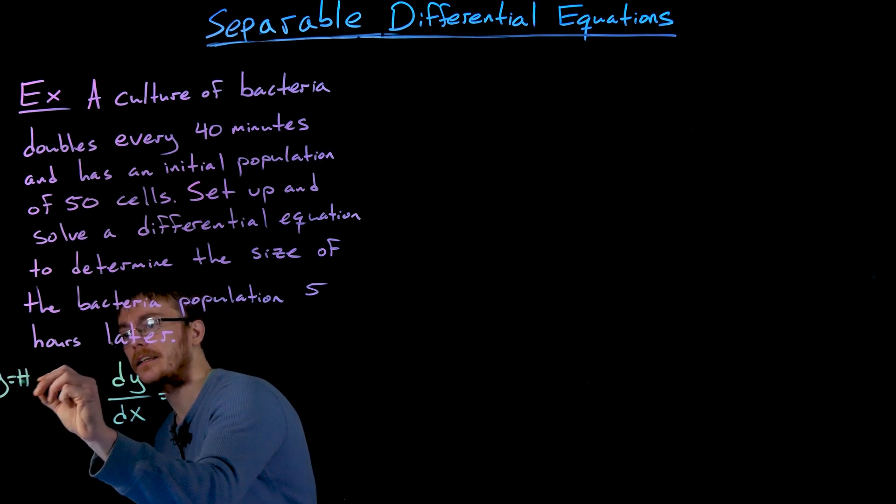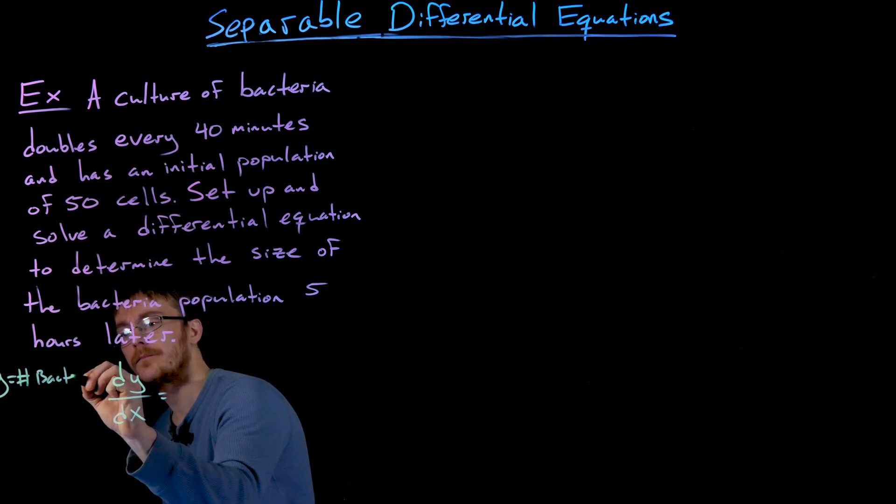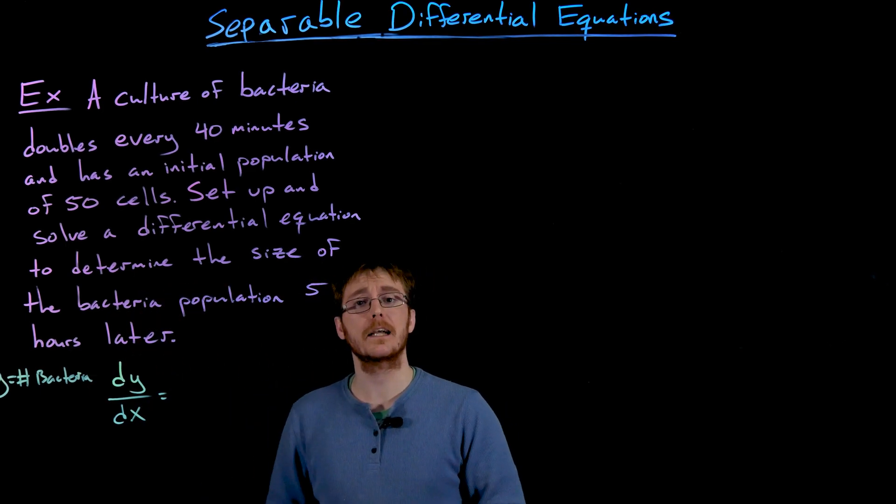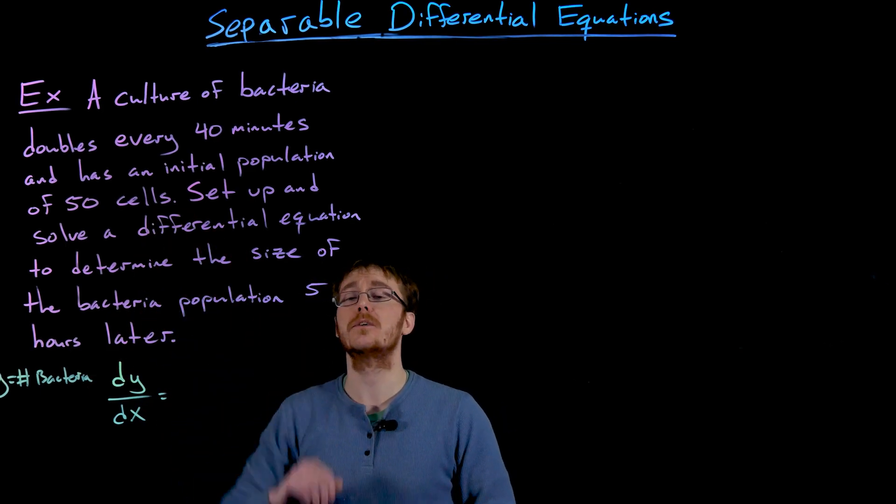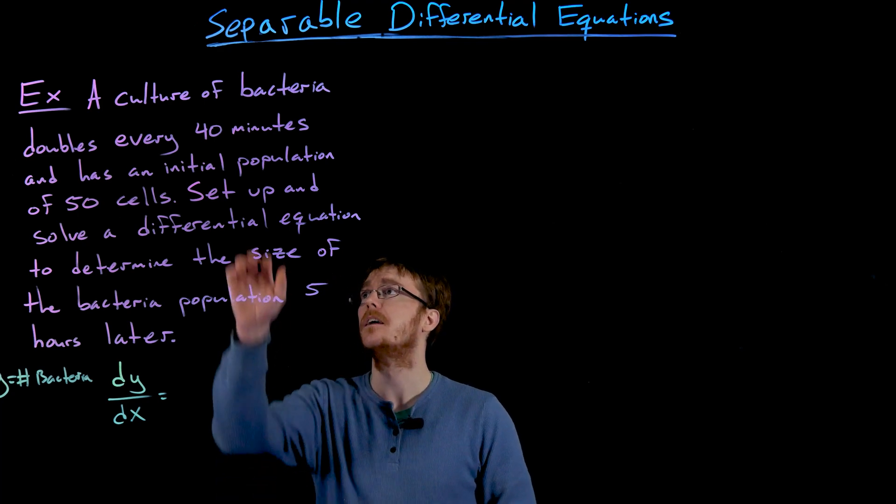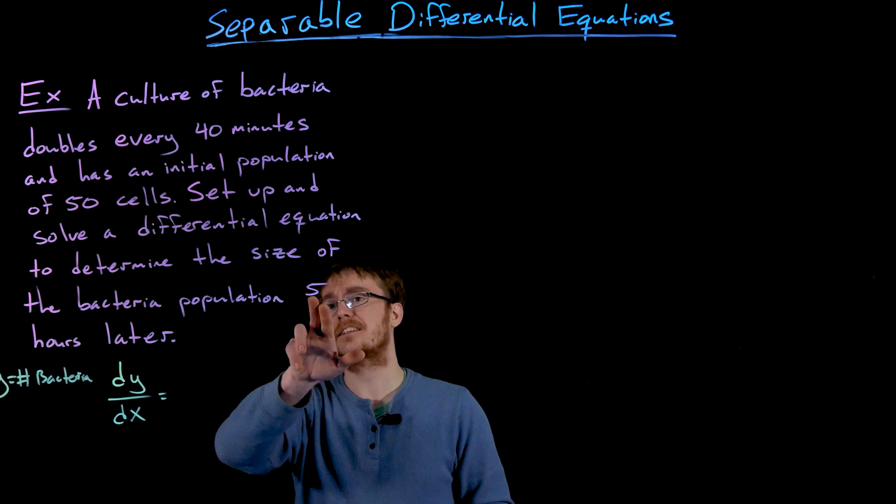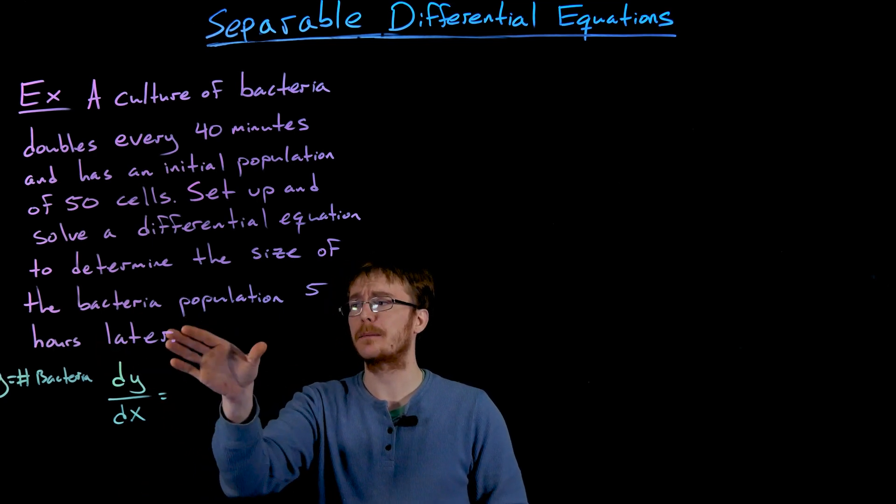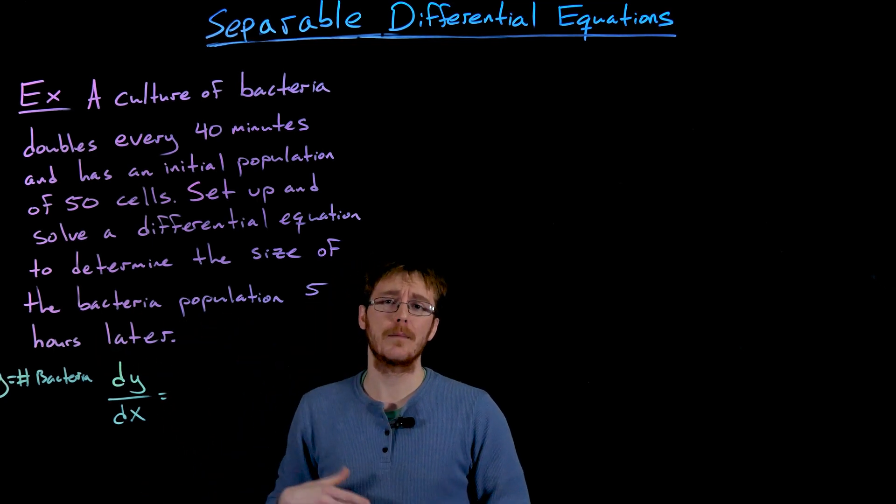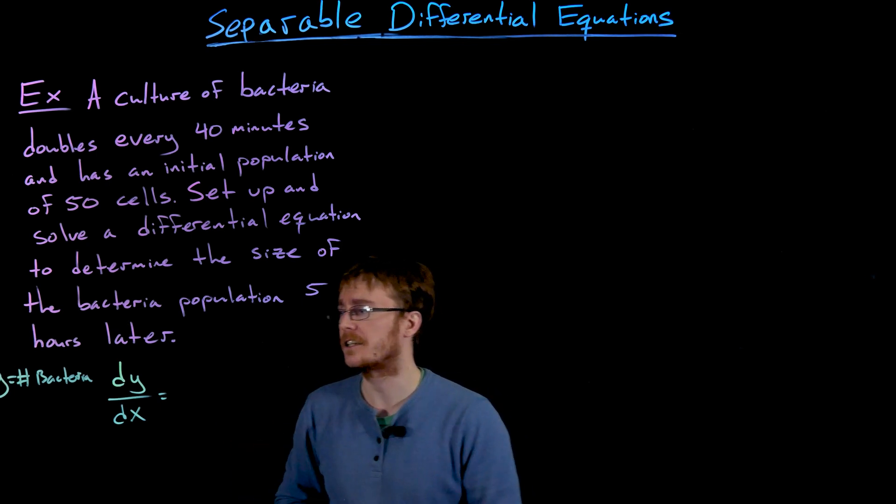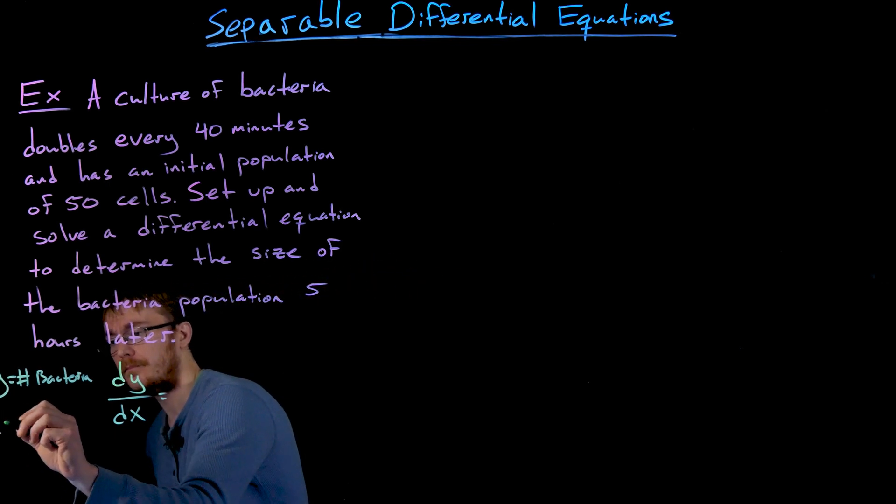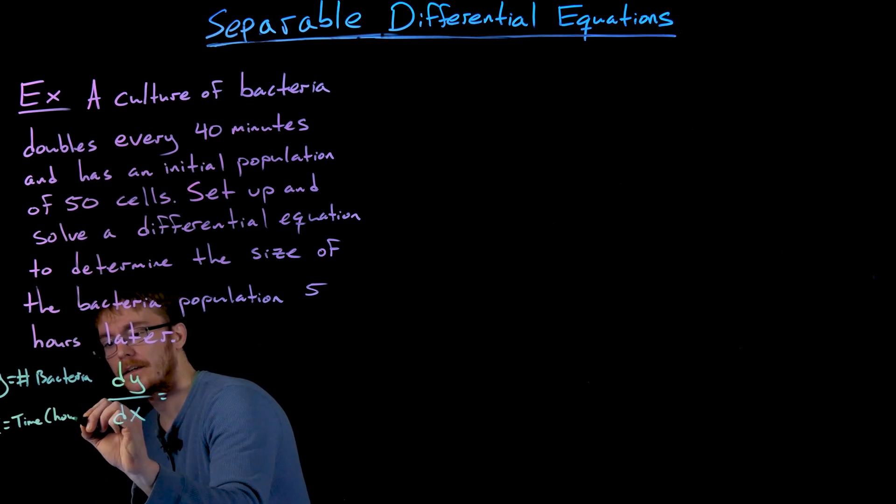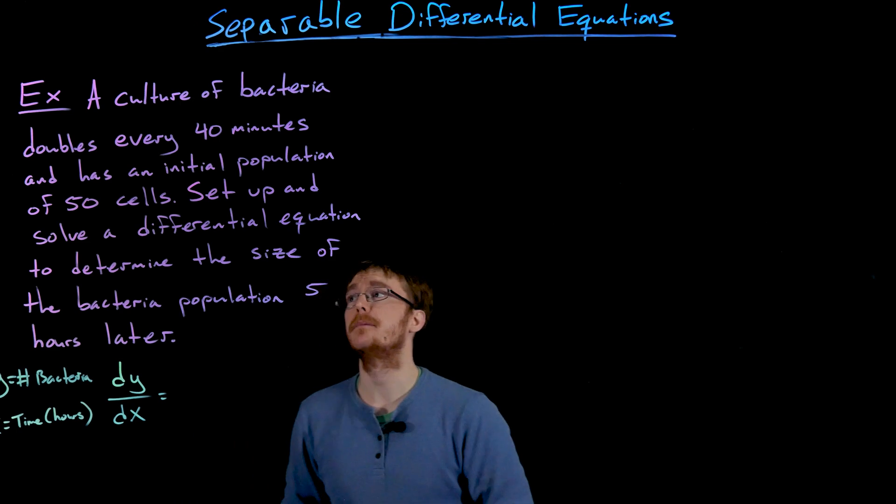So y is representing the number of bacteria and x is going to represent time. But we have to be a little bit careful here because we're looking at two different units of time in our problem statement. We're using minutes as our units up here, then we're asked to find the population after five hours. Because we're asked to find the population after five hours, maybe let's use the units of hours in constructing our model here. So x is representing time in hours instead of minutes.